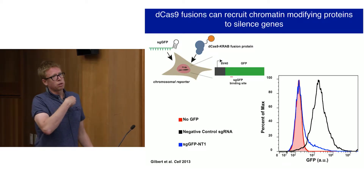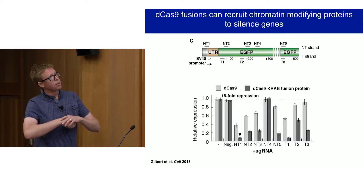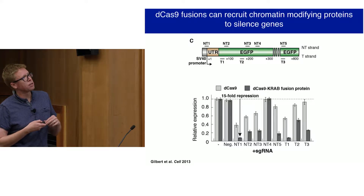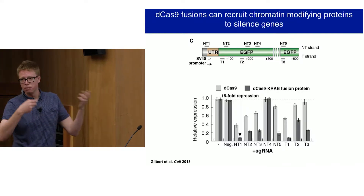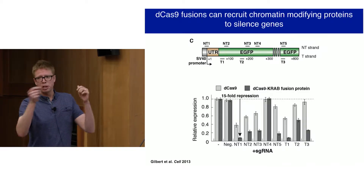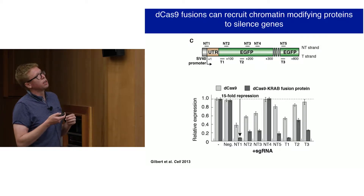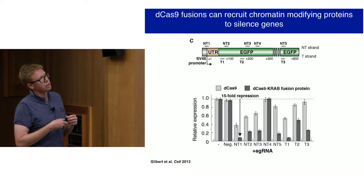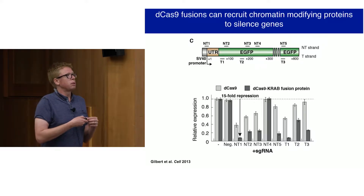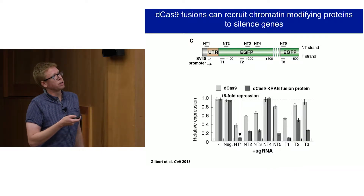Our ability to semi-robustly control transcription doesn't mean much if it's not a general property. So we tested quite a few guides targeting this GFP reporter to derive rules — similarly as we had done in bacteria — for where we needed to position these complexes along a gene to most robustly control transcription. You can see about eight guides tested; some work, not all of them work. We started to learn preliminary rules.